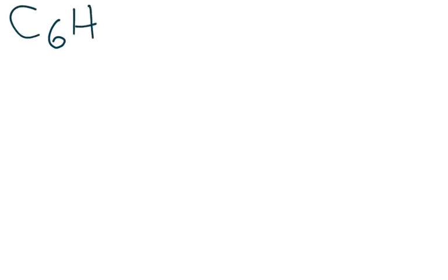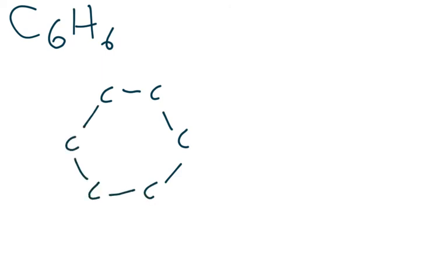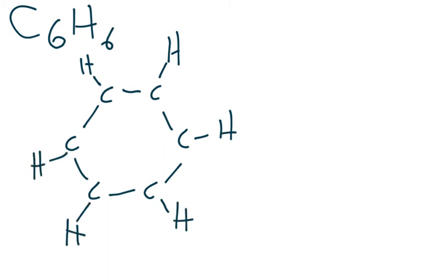There is one more example to show: benzene, C6H6. Benzene is six carbons arranged in a hexagonal ring, and each carbon has a hydrogen. What happens is benzene is actually an alternating single, double, single, double, single, double bond arrangement.